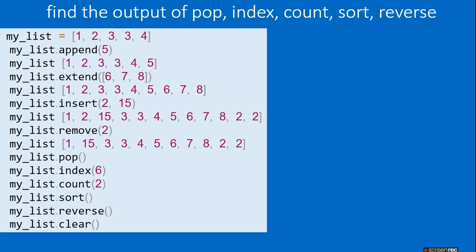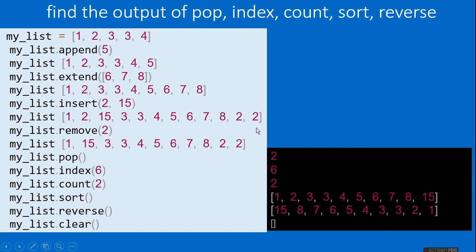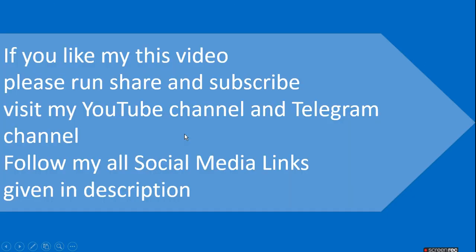count(2) gives 2 because there are two 2s in the list. sort() sorts the list in order. reverse() reverses it. clear() removes all elements. So: pop answer is 2, index answer is 6, count answer is 2, then the sorted list, reversed list, and clear leaves an empty list. Thank you viewers — if you like this video, click, share and subscribe, and follow all my social media links in the description.